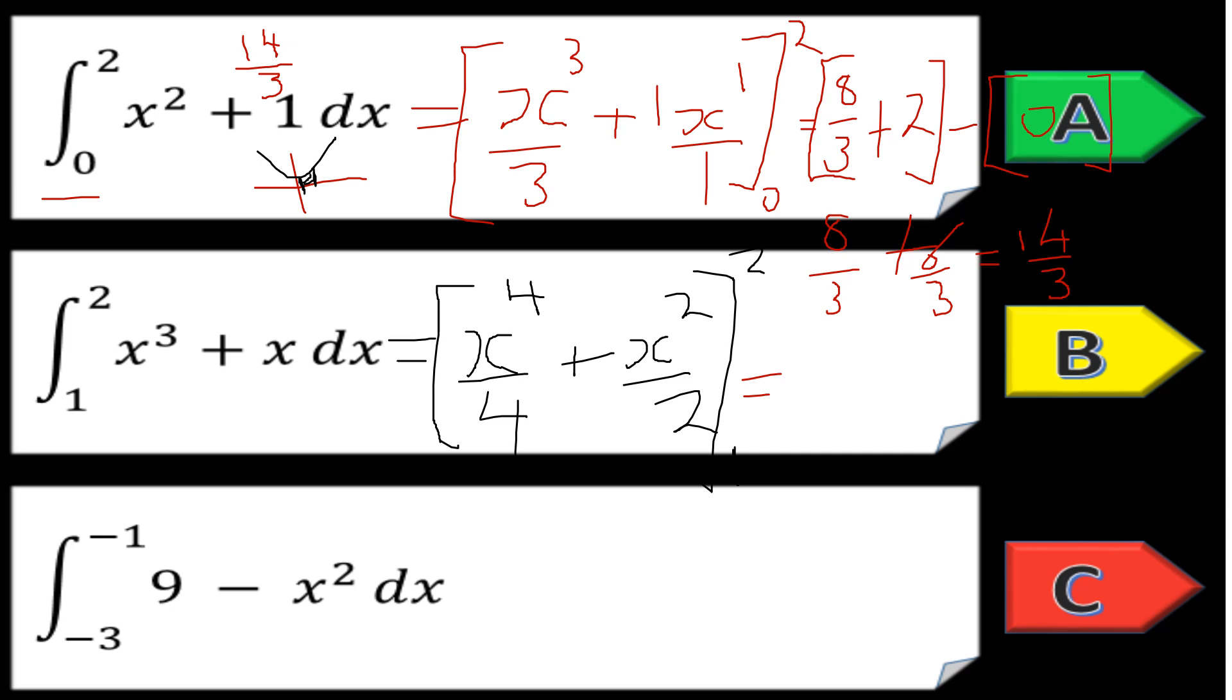We need to be a bit more careful. We'll have two to the fourth, which is sixteen, divided by four, so that'll be four. Plus two squared, so that'll be four over two, which is two. That'll be six for that first part.